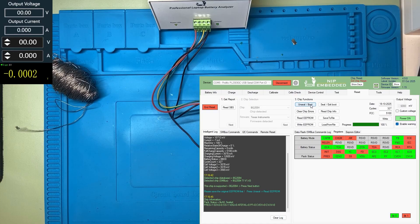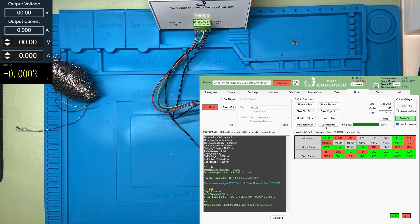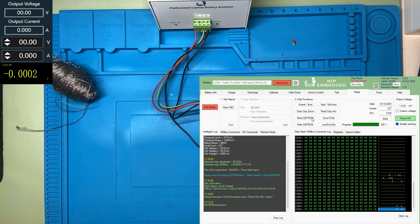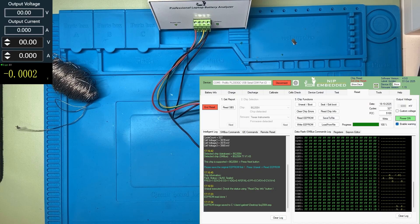Now let's go to the reset tab and change the parameters that we need to change. First, we're going to unseal. And it's very important to read the EEPROM first. We need to save it to a file. Now let's change these parameters.